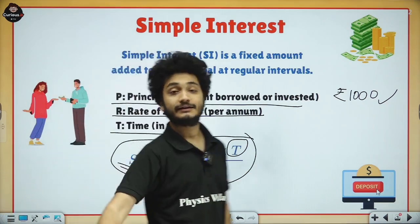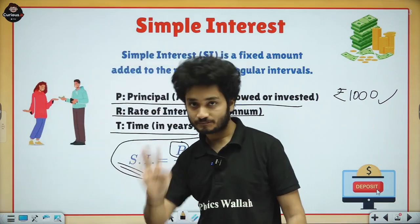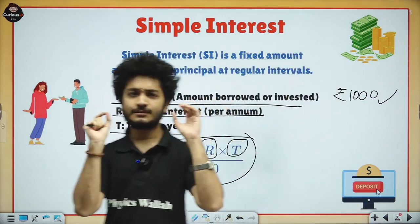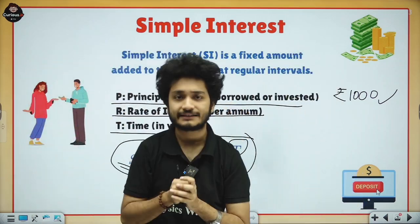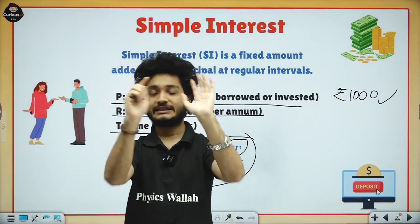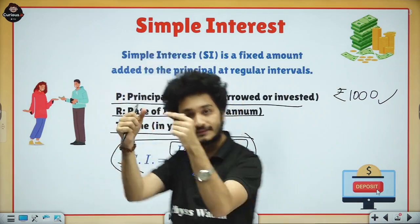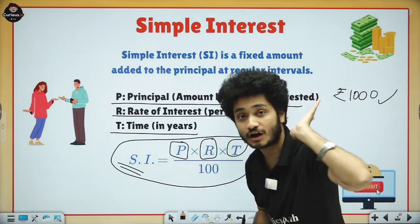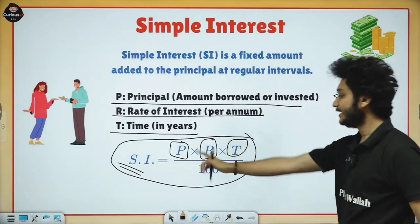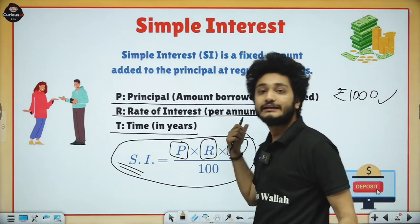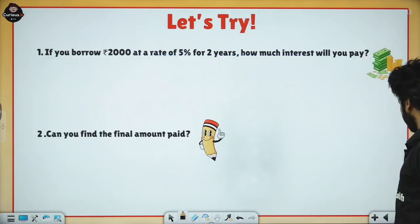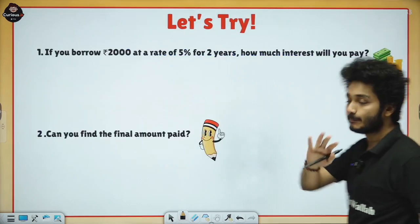So that's the formula for simple interest. When two people lend and borrow money, at return time they give a little extra — that is interest. And this is how we calculate that little extra: P × R × T ÷ 100, where P is principal, R is rate of interest, and T is time. So let's do an example.